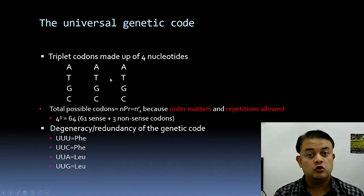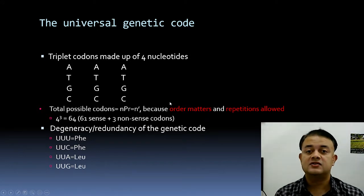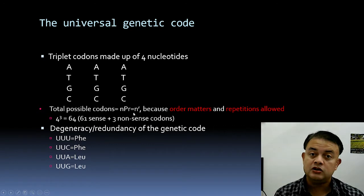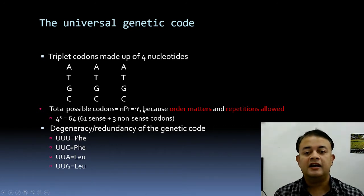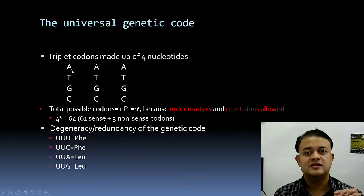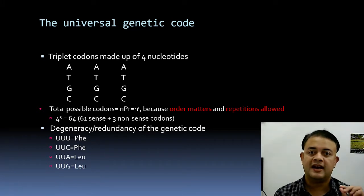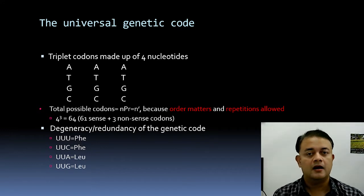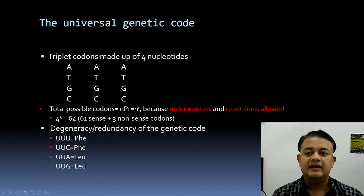The formula for permutation with repetition allowed is n^r. Here n = 4 (four types of nucleotides: A, T, G, C) and r = 3 (three positions in a codon), giving 4^3 = 64 possible codons.